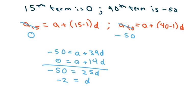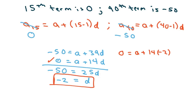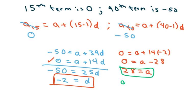That's one answer. Now to find a, I'm going to use this equation. So I have 0 equals a plus 14 times negative 2. So 0 equals a minus 28. So 28 equals a.